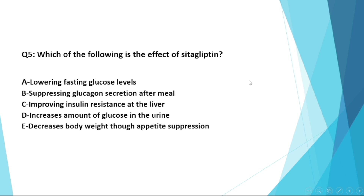Question number five: which of the following is the effect of sitagliptin for lowering fasting glucose level? Options include suppressing glucagon secretion after a meal, improving insulin resistance at the liver, increasing glucose in the urine, or decreasing body weight through appetite suppression. The correct answer is that DPP-4 inhibitors work by suppressing glucagon secretion after the meal.